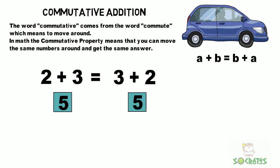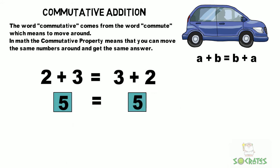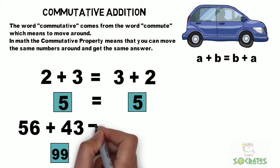It doesn't matter which numbers we use. We can use larger numbers. As long as we keep the same numbers and are just moving them around or commuting them, then we are going to get the same answer. 56 plus 43 equals 99.